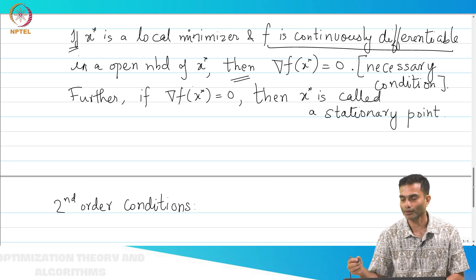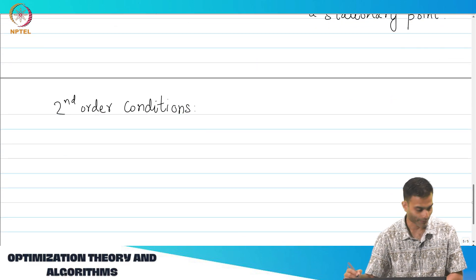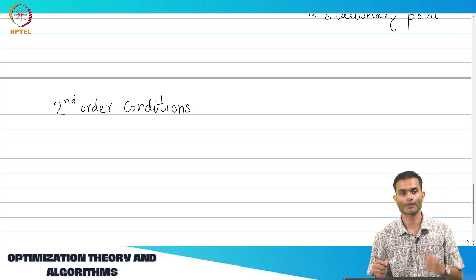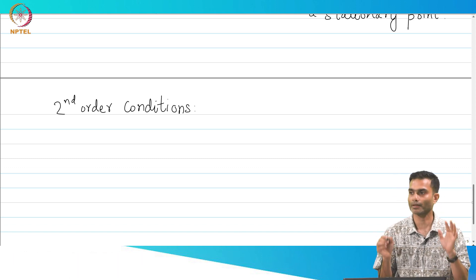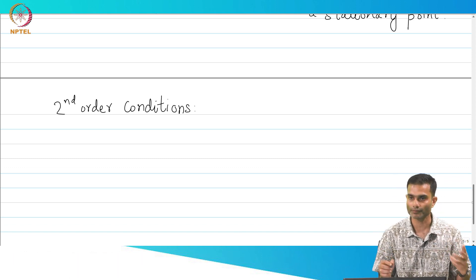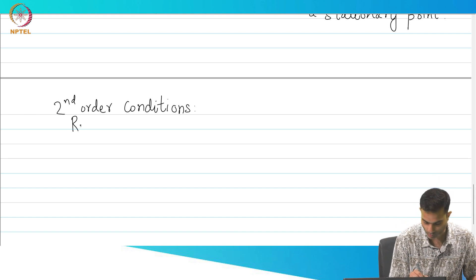Since it involves second order, it may be a little bit more difficult to evaluate. Now, for the second order conditions, we are going to second order derivatives. So, my requirements are little bit more stringent on the function. So, what do I require? Let us note that down.